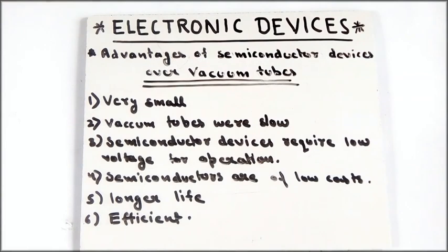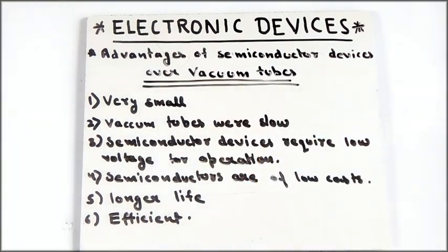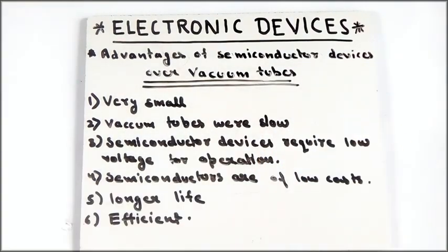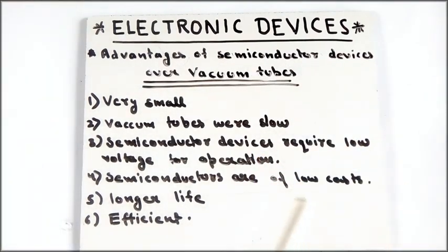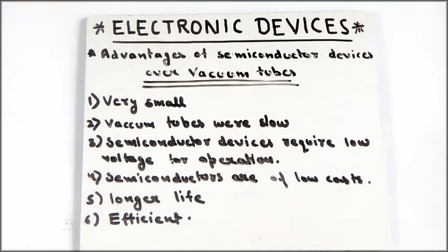In the next video we will understand the classifications of solids on the basis of their conductivity and resistivity, and there we will understand what are metals, what are insulators, and what are semiconductors. To watch that video click the card right up here or click the video in the end screen. Thanks for watching, and always remember that math is everything.